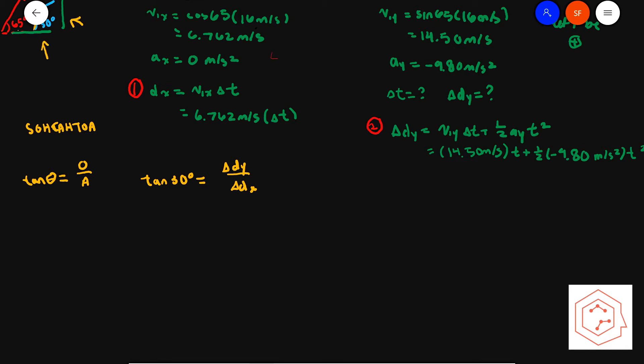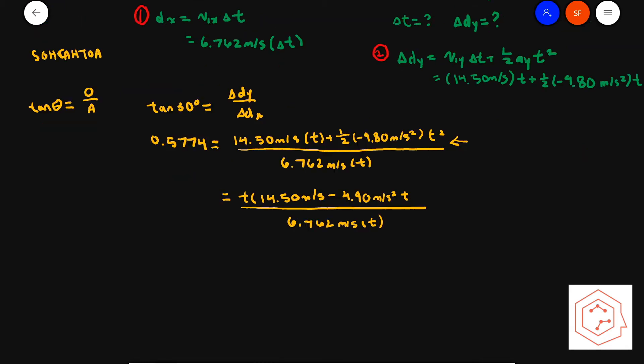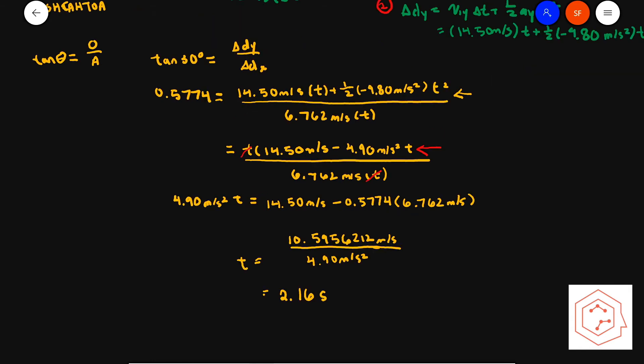The y component is your opposite and the x component is your adjacent. Factoring your equation, you'll see that one of the t's on top cancels with the t on the bottom, so you only have one term with t, and that's what you isolate for. Isolating for t and then solving gives you 2.16 seconds.